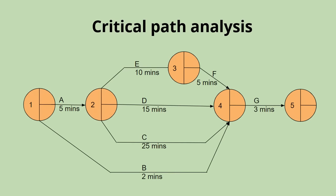Once we've drawn up the network, we need to fill out the earliest start times and latest finish times. We calculate earliest start times by adding up the longest activity durations. We start at node one with an earliest start time of zero. Adding the preparation of ingredients (five minutes) gives node two an EST of five minutes — the earliest time we can start cooking the sausages, bacon, and beans. Moving to node three, the beans take 10 minutes, added to the five minutes EST, giving an EST of 15 minutes before we can start frying the eggs.